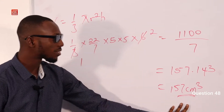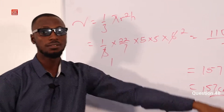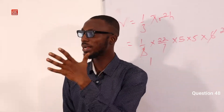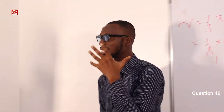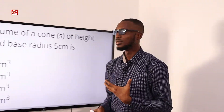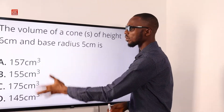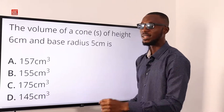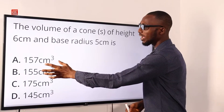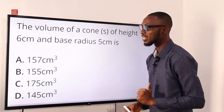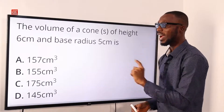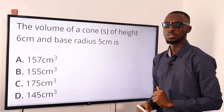The correct answer is 157. Join me as we go back to the screen to select the correct option. Look through the options provided and you will see option A, 157 cm cubed, as the correct option.